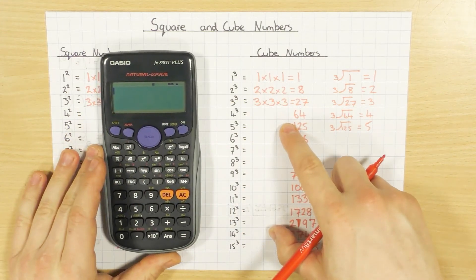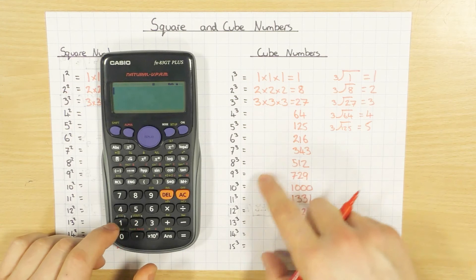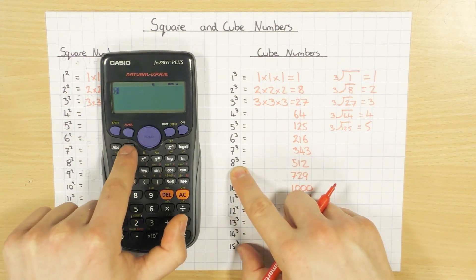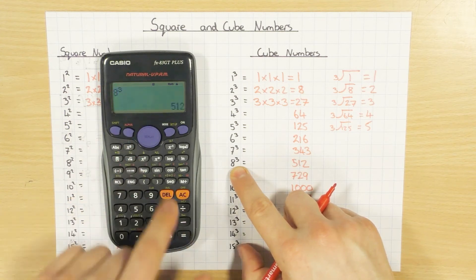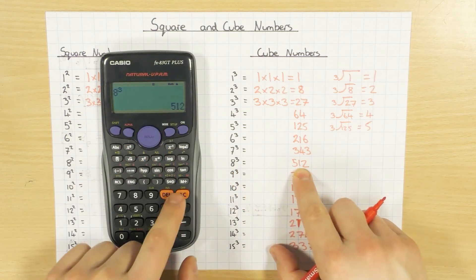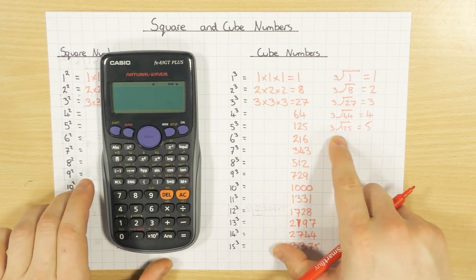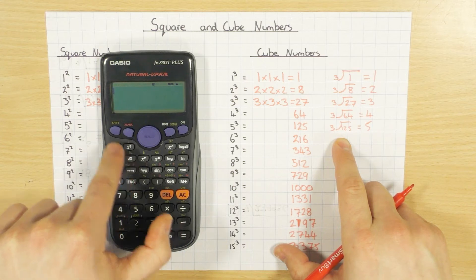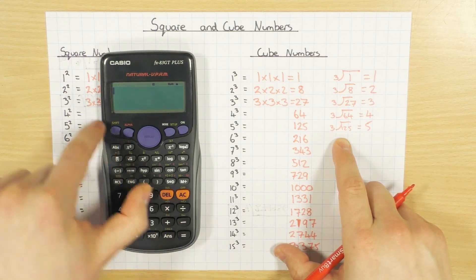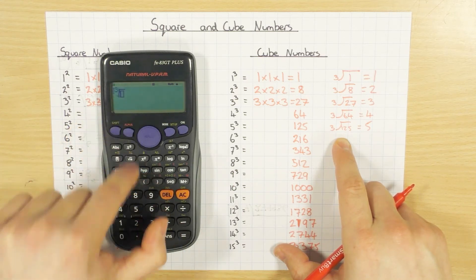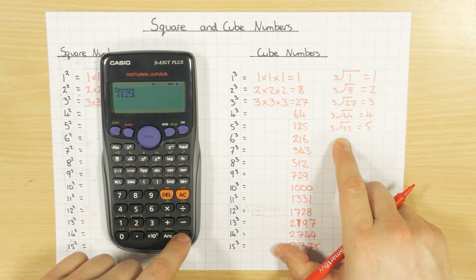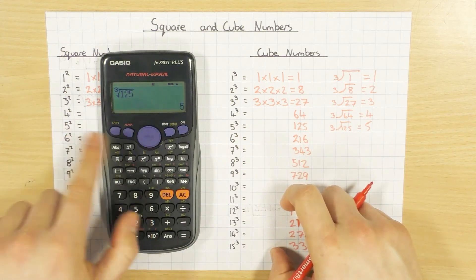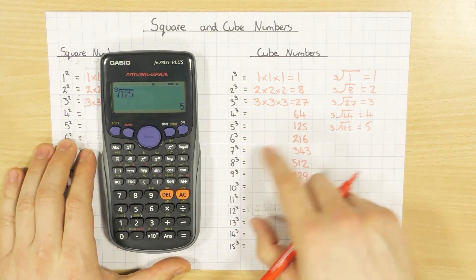Cube numbers on a calculator: let's go 8 cubed. So 8, and you've got the x cubed button here — press that, and of course you get 512. And the cube root: if you look on the square root button, in yellow above it is the cube root button. To get that yellow button, we press Shift because it's in yellow. Press that and then you can put in your 125. Press equals and it gets you back to 5. So that's where the square and square root buttons are, and the cube and cube root buttons are.